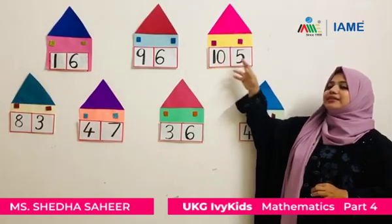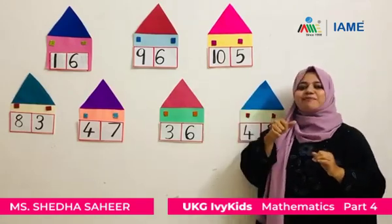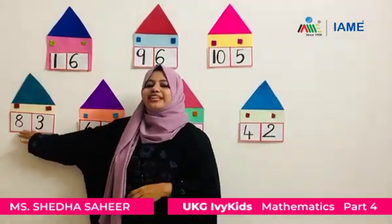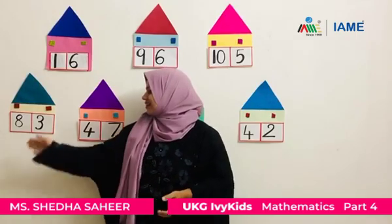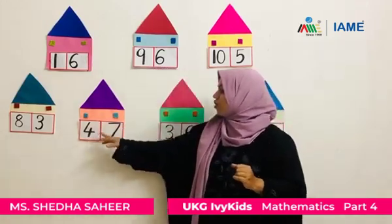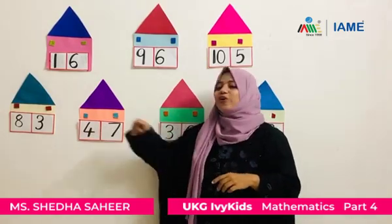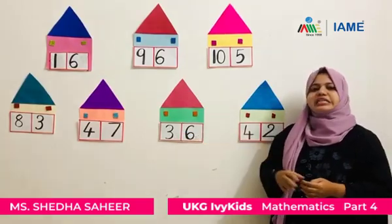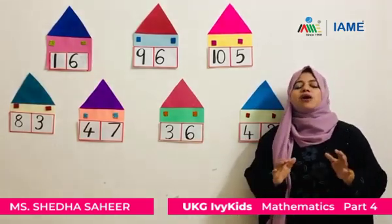Now let's compare these two numbers — ten is the biggest number and five compared to ten is the smallest number. Now let's look at these two numbers: eight and three. Three is the smallest number and eight is the biggest number. Now four and seven — four is the smallest number and seven is the biggest number. Now three and six — six is the biggest number and three is the smallest number.